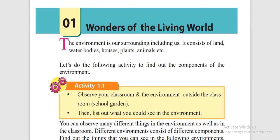Hello Goethe students, today we are going to see the first unit of the science: Wonders of the Living World. First we will see what is the environment. The environment is the surrounding including us. It consists of land, water bodies, houses, plants and animals, and so on.